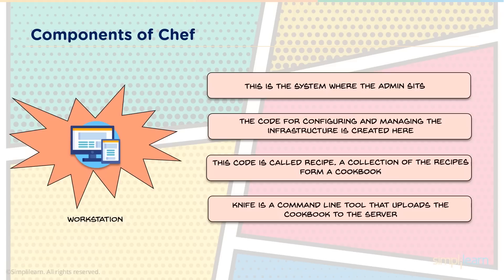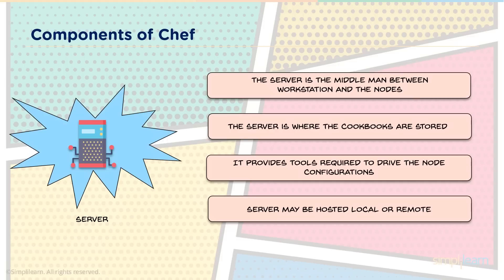The first component of Chef is the workstation — the system where the system administrator creates codes for configuring nodes. These codes, written in Ruby, are called recipes. A collection of recipes is called a cookbook. Cookbooks are created at the workstation but need to be stored at the server. Knife is a command-line tool that shifts these cookbooks from the workstation over to the server. The second component is the server — the middleman between workstation and nodes — where all cookbooks are stored.